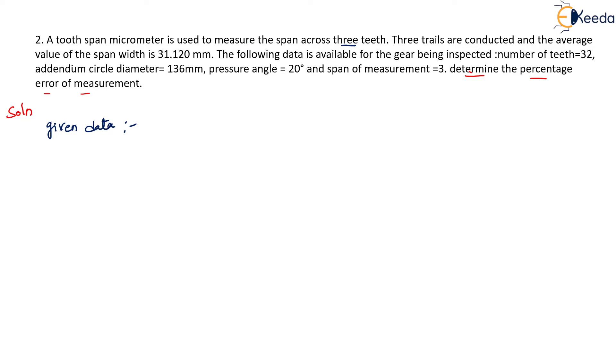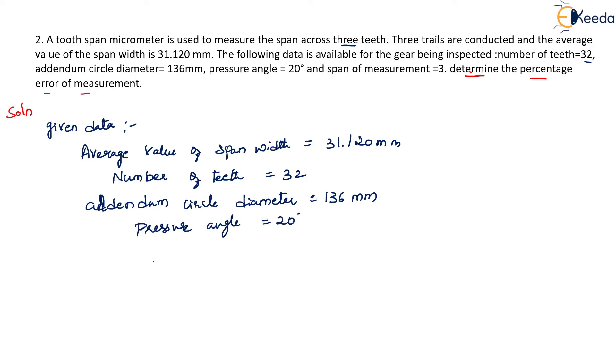So here average value of span width, and the number of teeth is 32, addendum circle diameter is 136 mm, pressure angle is 20 degrees, and span of measurement is given as 3.